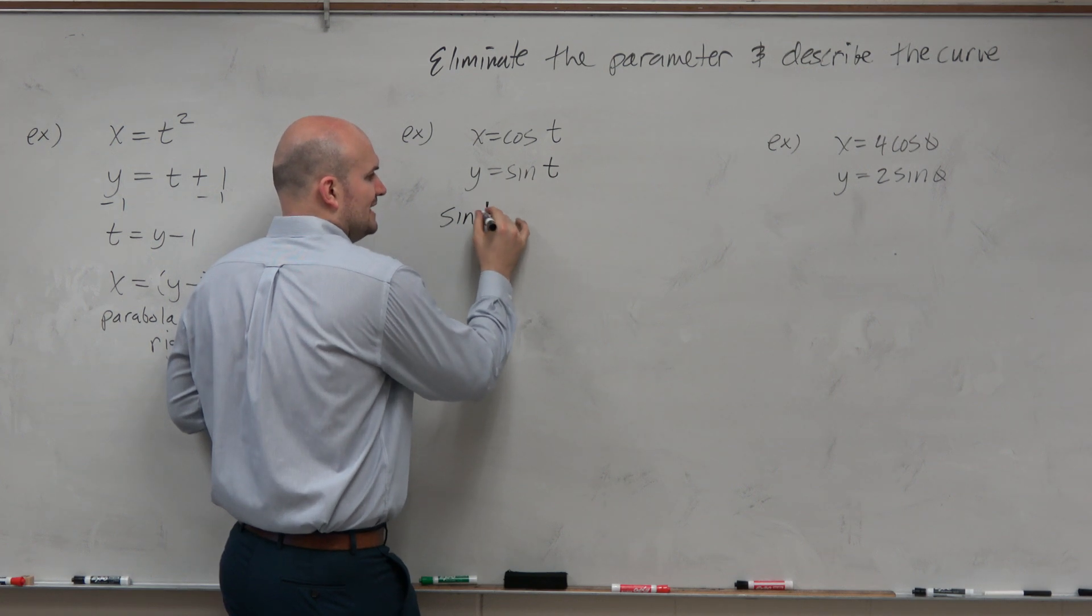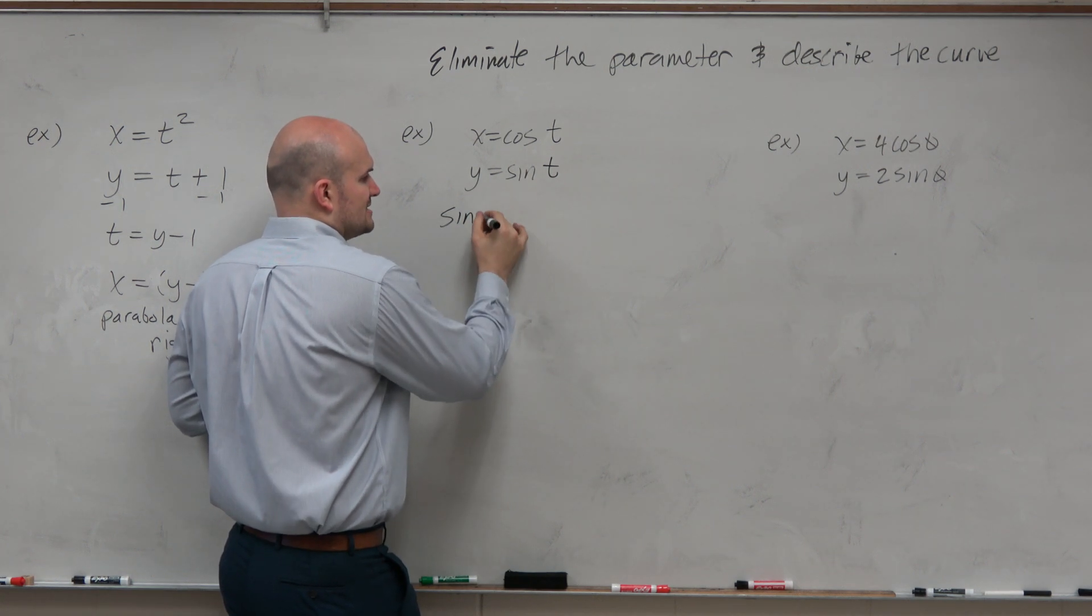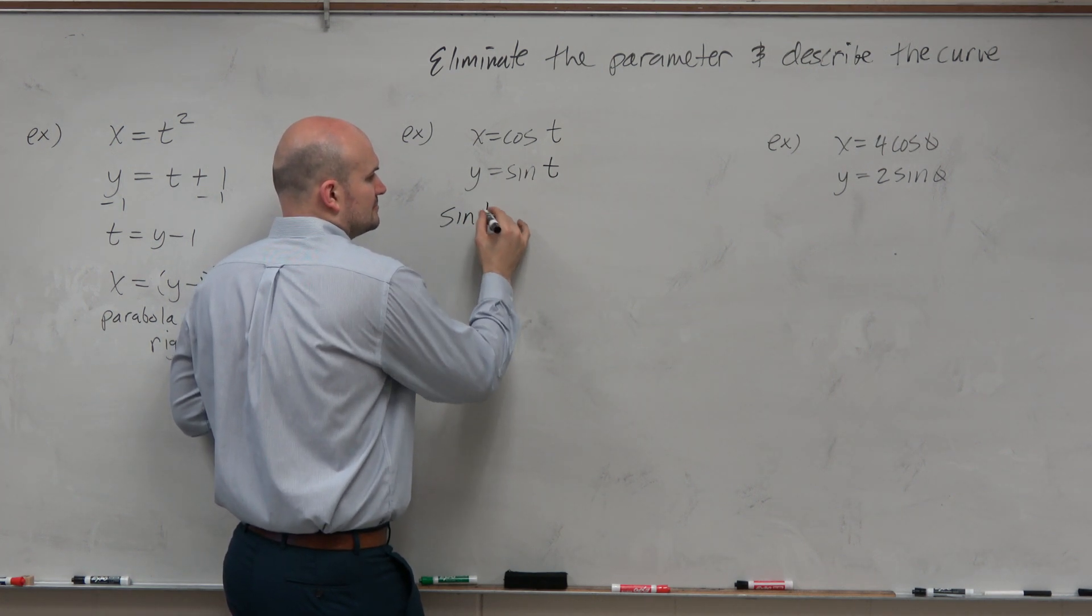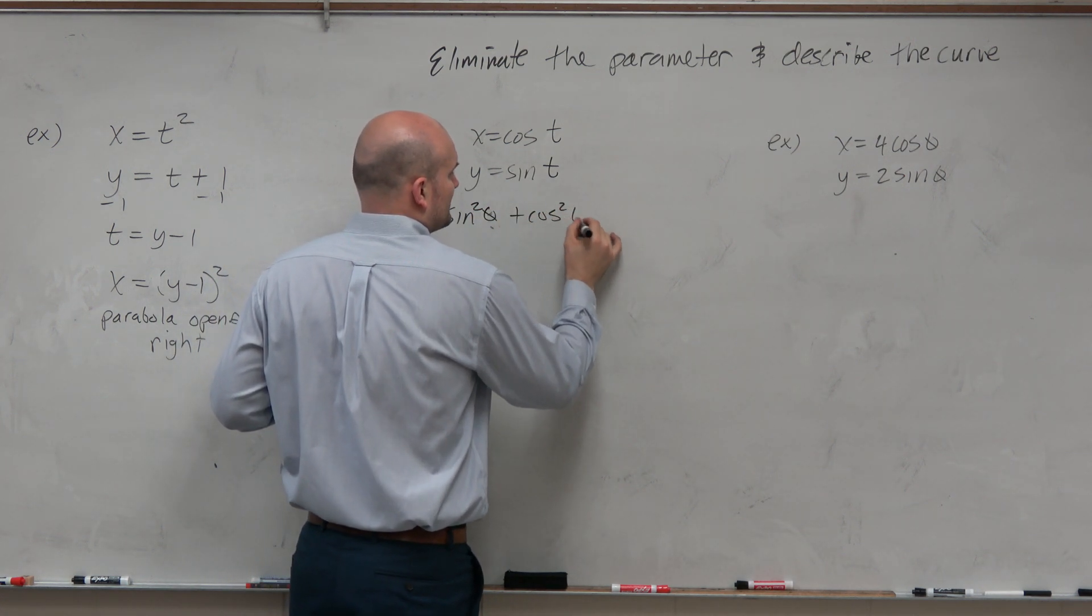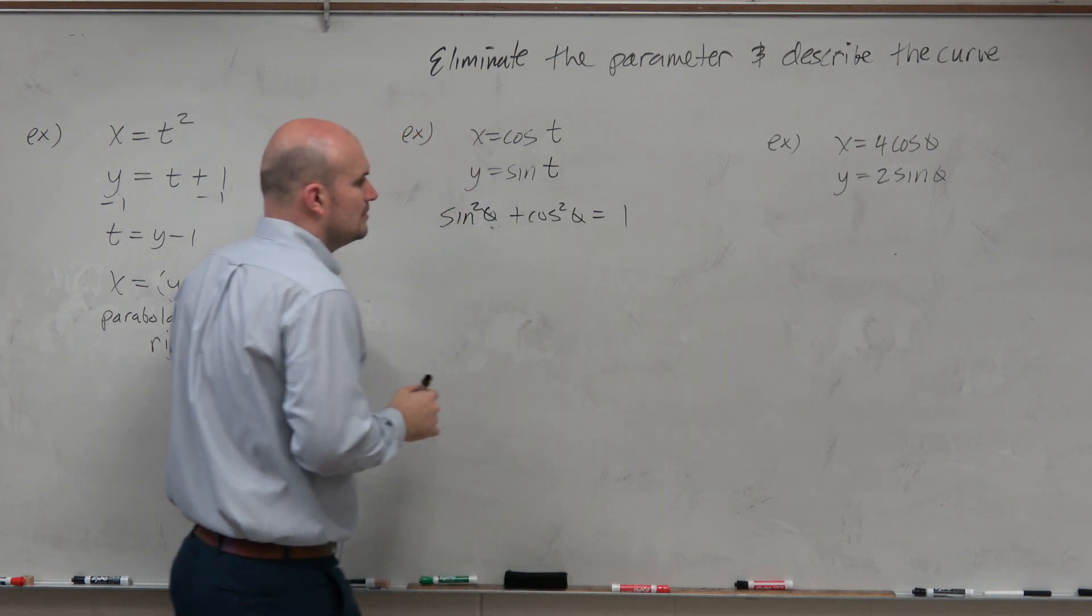Sine of t, or let's say sine squared of theta plus cosine squared of theta equals 1.